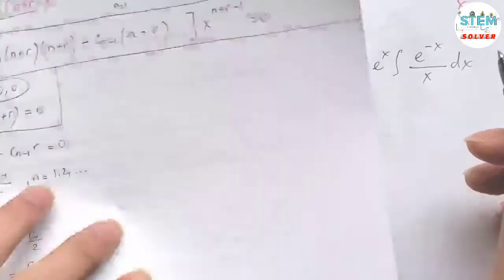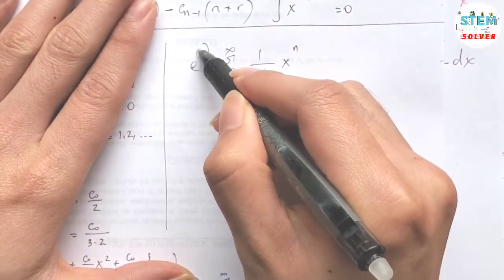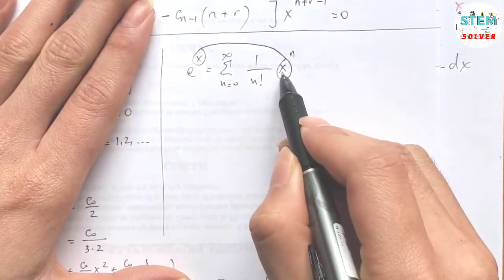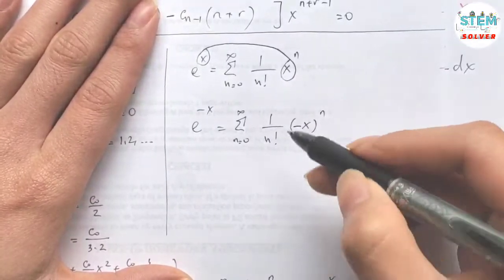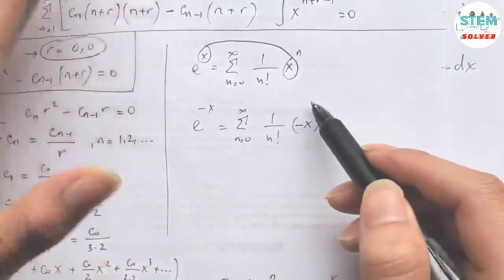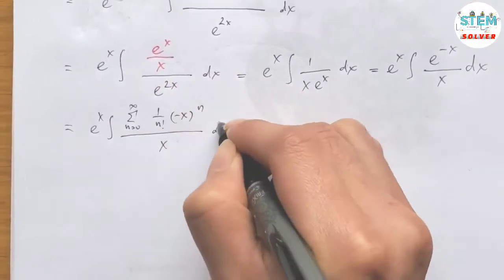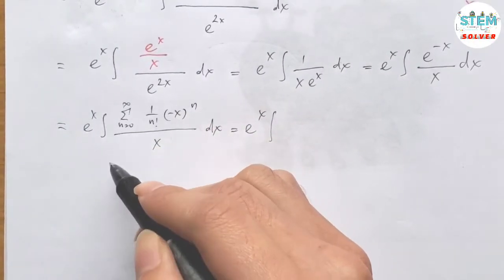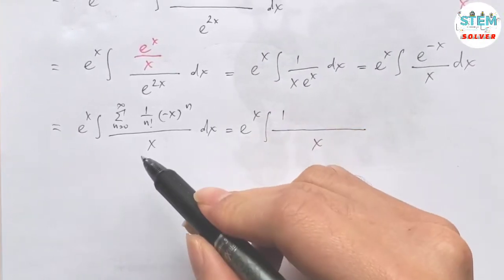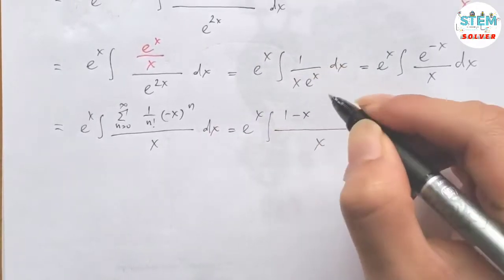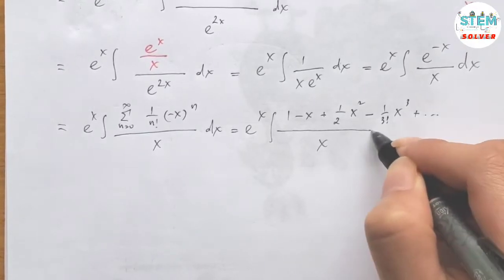Recall that e to the x equals the power series from 0 to infinity of 1 over n factorial times x to the n. So e to the negative x equals the power series from 0 to infinity of 1 over n factorial times (negative x) to the n. Writing out terms: 1 minus x plus 1 over 2 · x squared minus 1 over 3 factorial · x cubed plus dot dot dot.